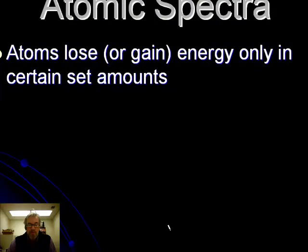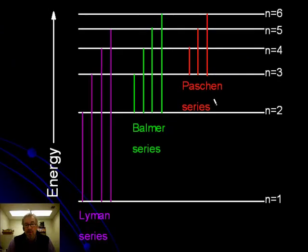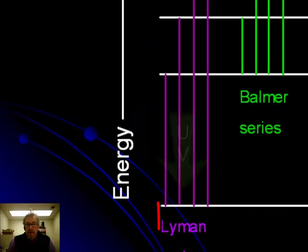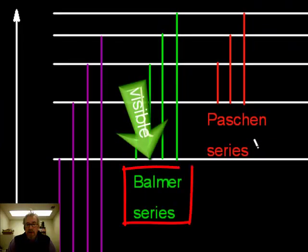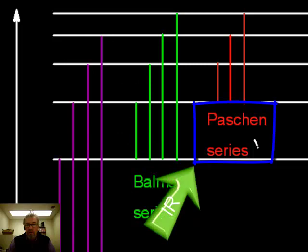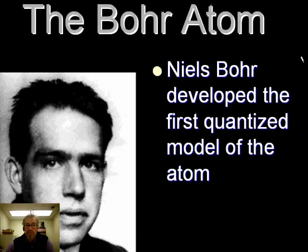Looking at the hydrogen spectrum, transitions fall into three categories. Transitions down to n=1 form the Lyman series — ultraviolet, invisible to us. Transitions down to n=2 form the Balmer series — the visible colors we can see. Transitions down to n=3 form the Paschen series — infrared. The first person to develop an atomic model based on this quantization idea to explain the line spectra was Niels Bohr, a Danish physicist widely recognized as one of the cleverest people ever to work in physics.